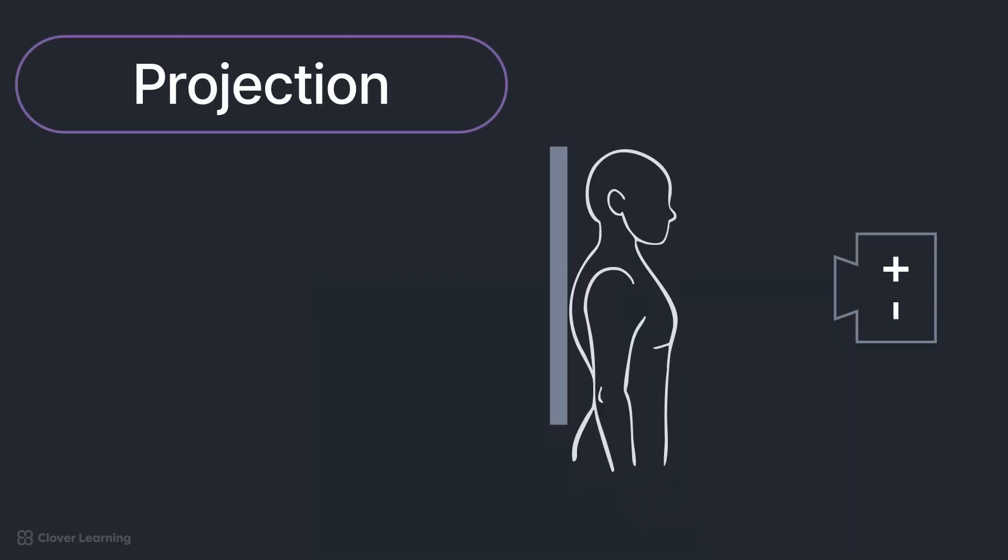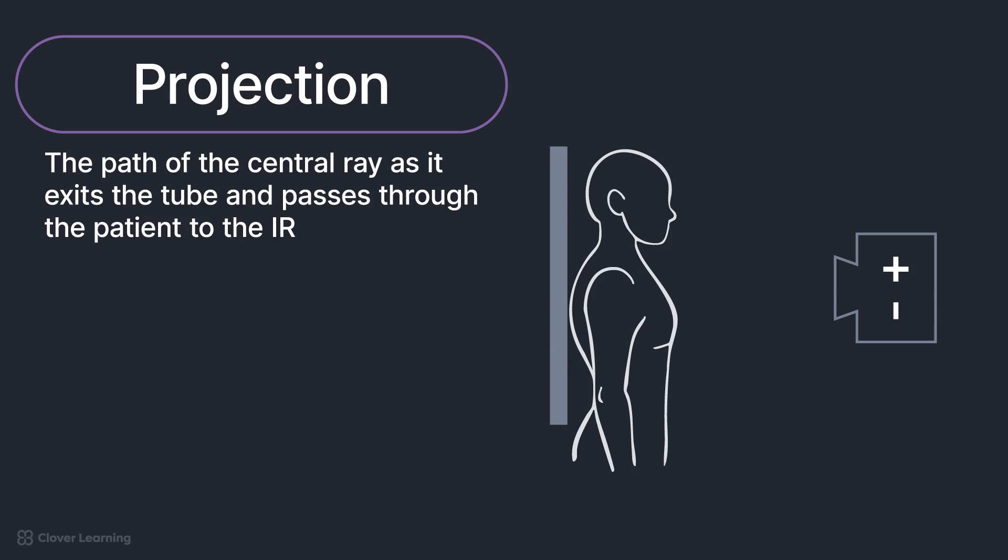Projection is defined as the path of the central ray as it exits the tube and passes through the patient to the IR. The majority of projections are determined by entrance and exit points based on anatomic position. For example, if the central ray enters anywhere on the front or anterior surface of the body and exits the back or posterior surface, an AP projection is obtained, regardless of body position. Radiographic examinations are typically labeled based on their projection.